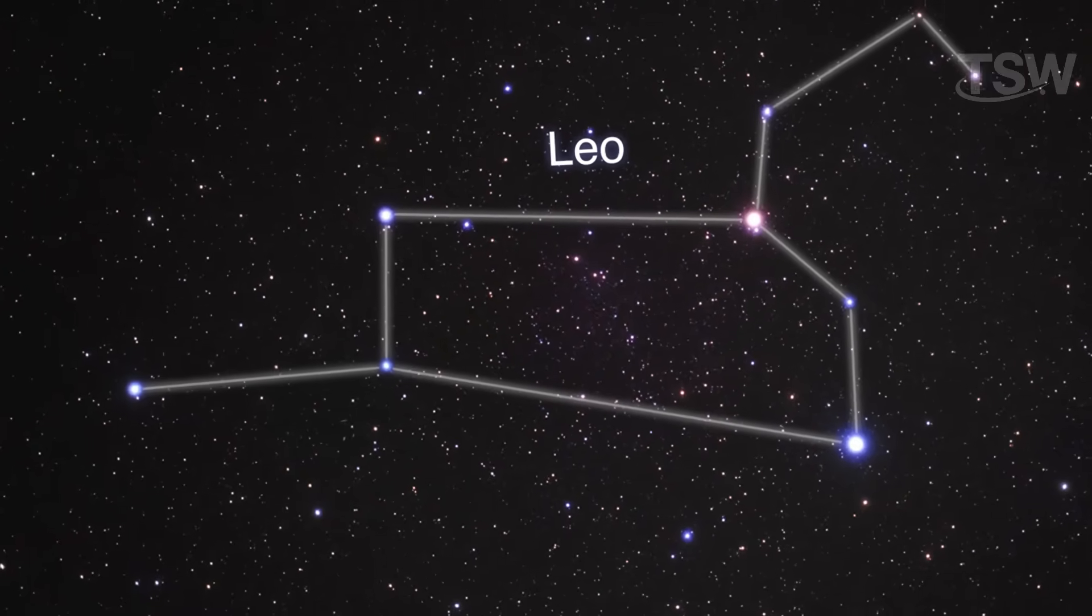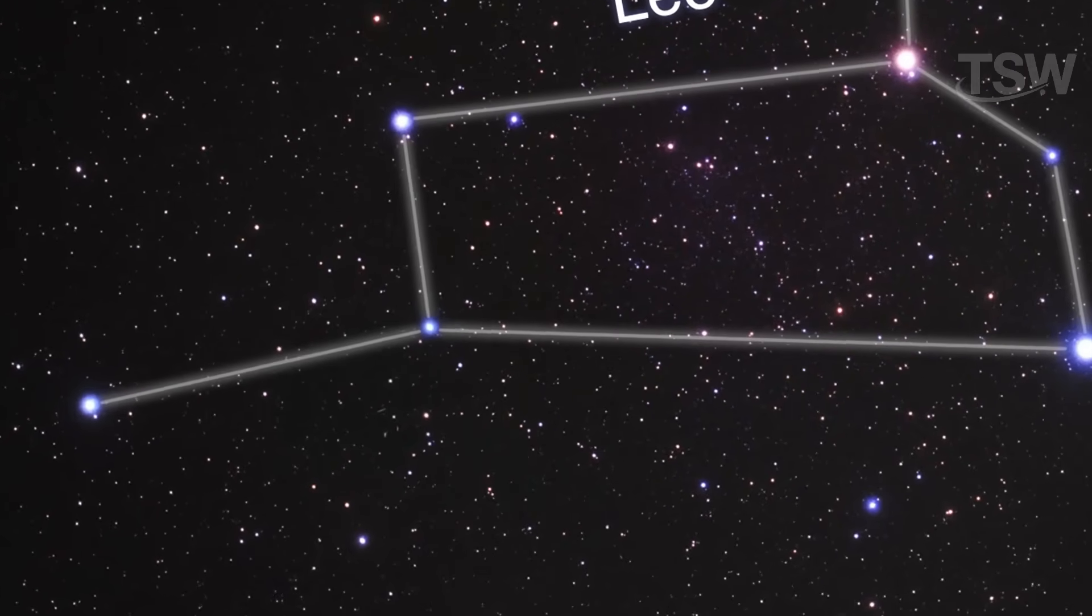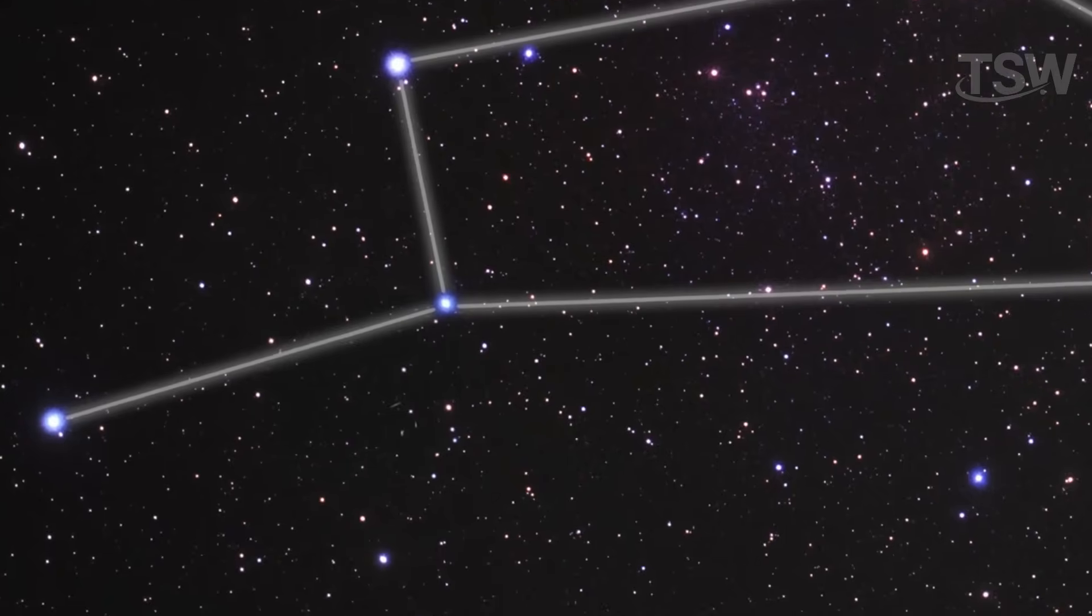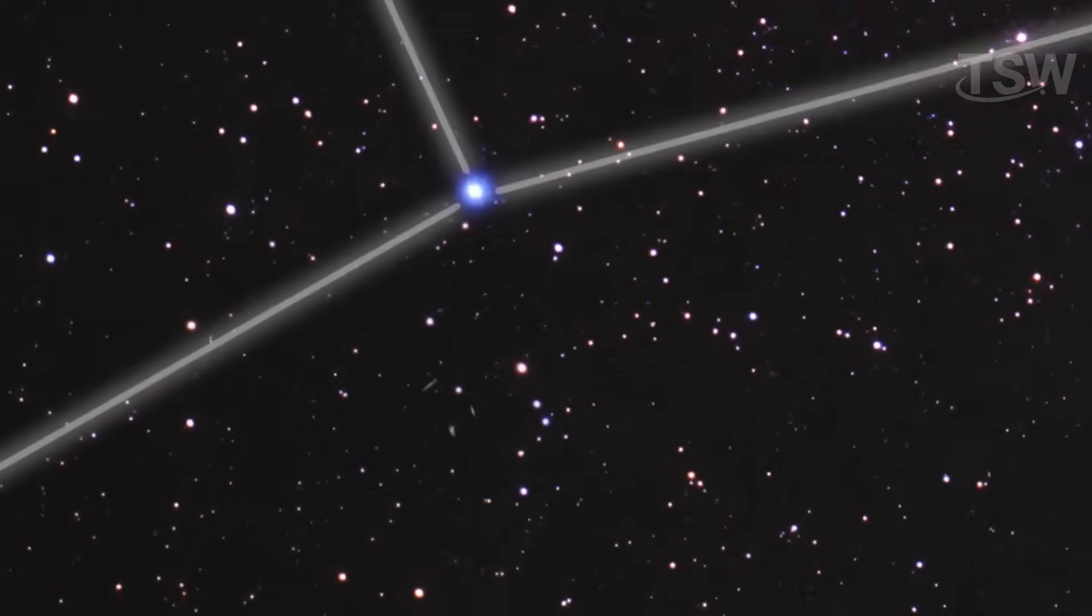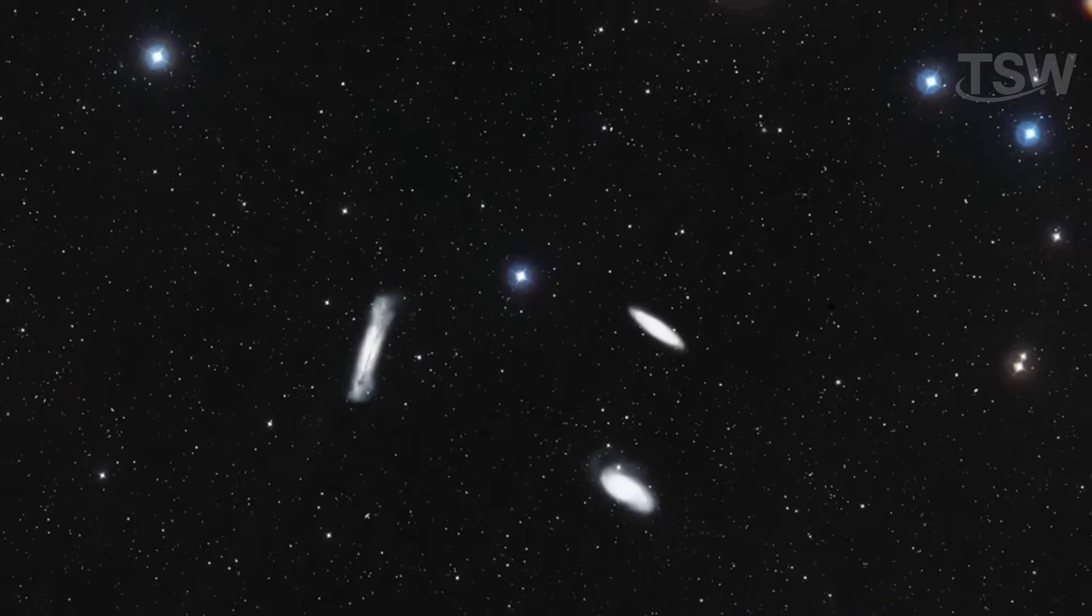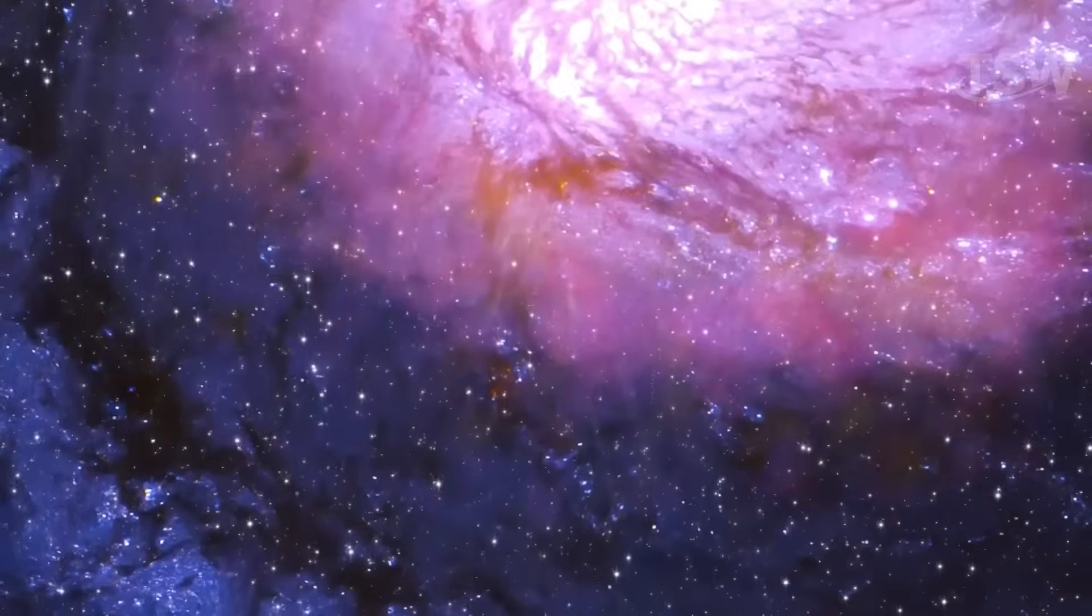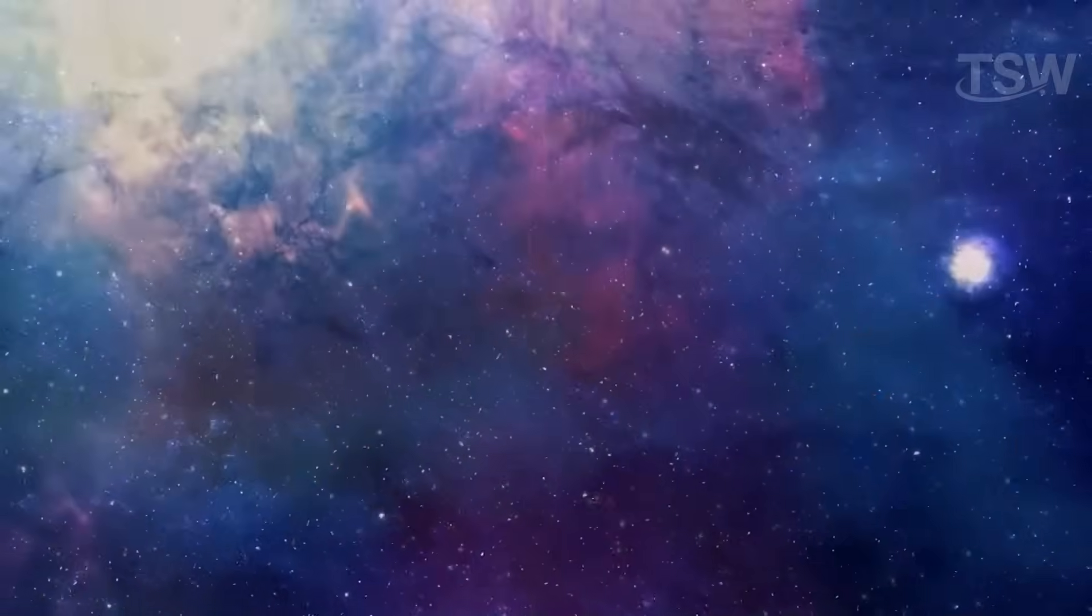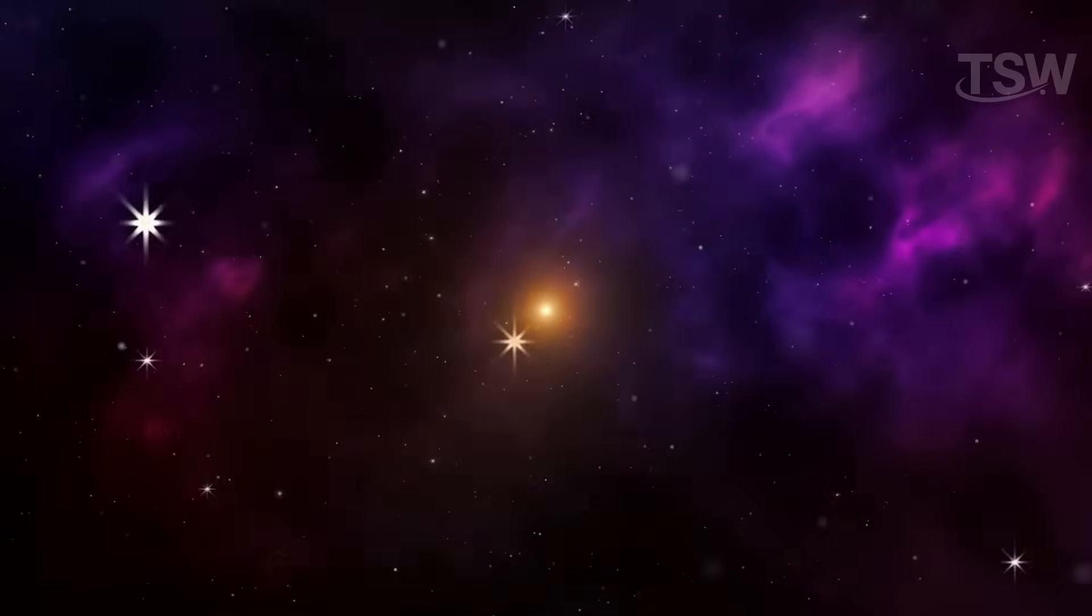Before we go that far, there are still other dwarf galaxies to visit. One of them is Leo I, a rather faint and distant satellite galaxy located about 820,000 light-years from Earth. It's so dim that it's difficult to observe, since it appears near the bright star Regulus in the constellation Leo. Even so, studies reveal that Leo I holds a significant number of stars, which seem to have formed almost simultaneously billions of years ago. Since then, it appears to have gone dormant, with no recent star formation.